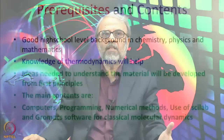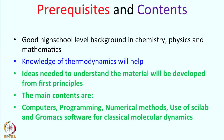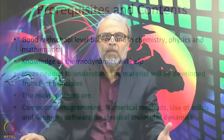Let us now go to what are the prerequisites and contents of this course. As far as prerequisites are concerned, if you have a good high school background of chemistry, physics, and mathematics, that is more than sufficient. You will also need some knowledge of thermodynamics that you have already studied in your 11th and 12th standards, and all ideas needed will be developed from first principles. The main contents are computers, programming, numerical methods, and use of Scilab and Gromacs software for classical molecular dynamics.